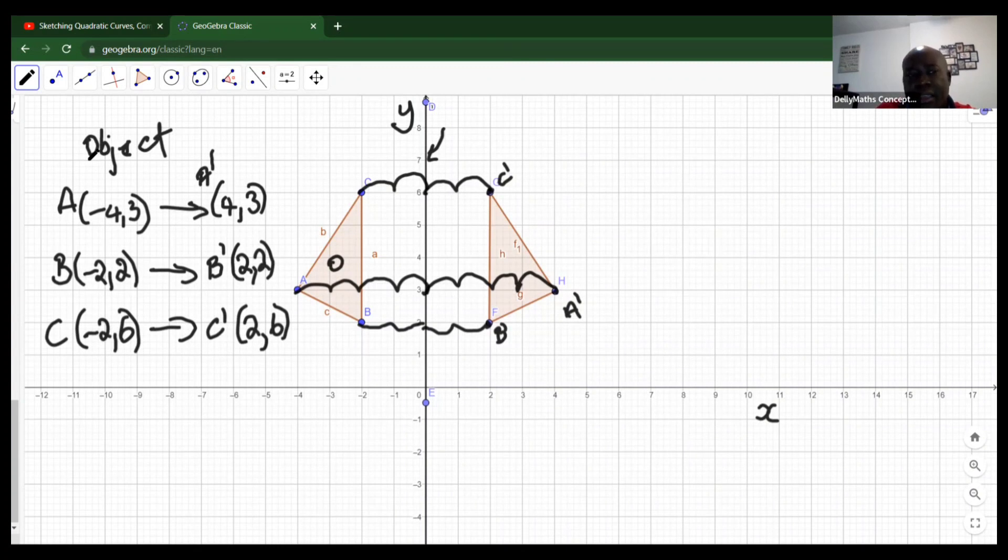So you're realizing that when you reflect in the y-axis, if we have a coordinate (x, y), after the reflection the x value will change its sign and the y value will remain as is. So basically, that is how you reflect in the y-axis. See you next time.